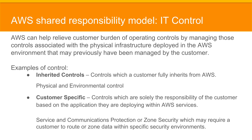The customer and Amazon Web Services shared responsibility model also extends to IT controls. Just as the responsibility to operate the IT environment is shared between AWS and its customers, so is the management, operation, and verification of IT controls shared. AWS can help relieve the customer burden of operating controls by managing those controls associated with the physical infrastructure deployed in the AWS environment that may previously have been managed by the customer.